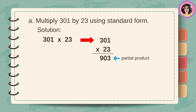Multiply 301 by 23 using standard form. 301 times 23. 3 times 1 is equal to 3, 3 times 0 is equal to 0, and 3 times 3 is equal to 9. 903 is a partial product.